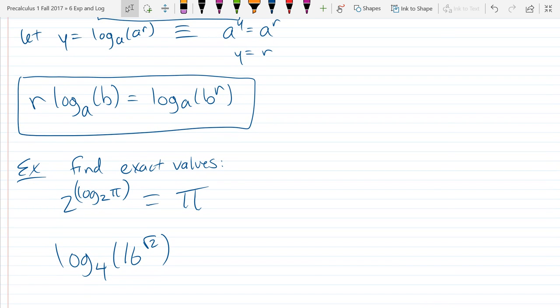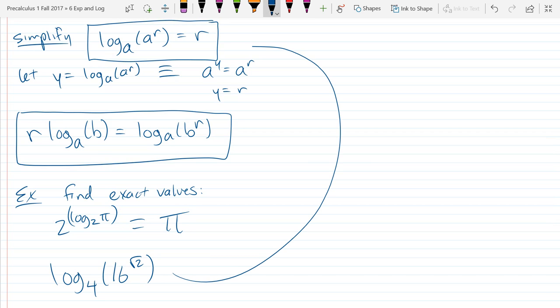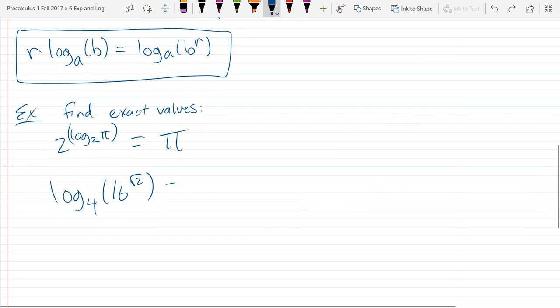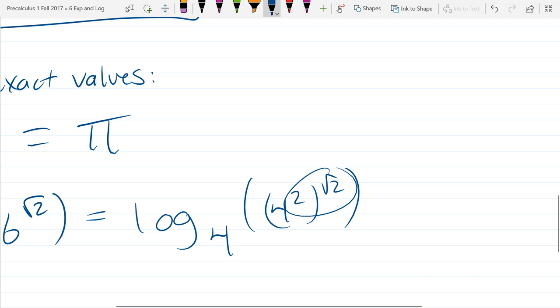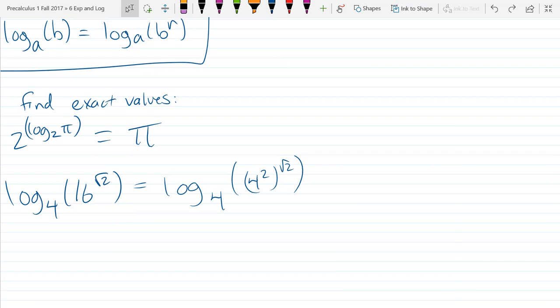So unfortunately, this one does not quite match the identity. I want to try to match it up to the top one right there. What is wrong with our situation? How does our situation differ from the identity above? So my base is good, 4, but it doesn't match the other base of 16. How can I rewrite 16 with the base 4? 4 squared. So we got log base 4 of 4 squared to the square root 2. And how do I combine these two exponents together?